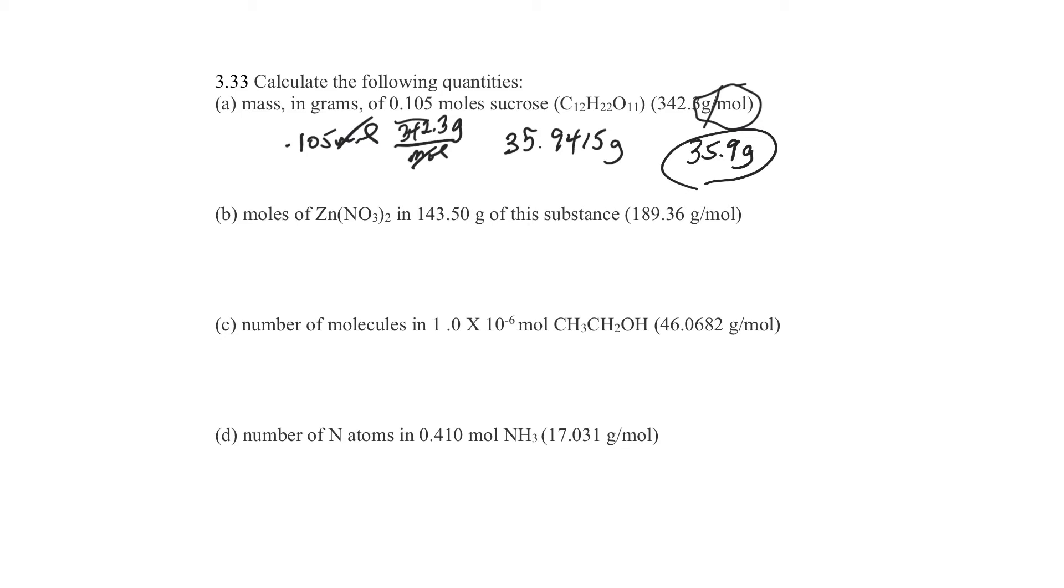Let's do the next one. We start with 143.5 grams. We're going to put grams on the bottom, and the number always goes with grams. So this is 189.36 grams per mole. So the mole can go on the bottom and the grams, number plus grams on the top, or vice versa. Whatever you've got, you're trying to get rid of it. So in this case, I've got grams, so I'm going to put grams on the bottom so it'll cancel.